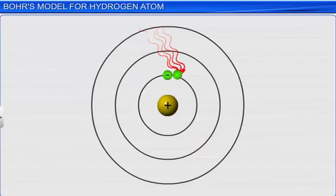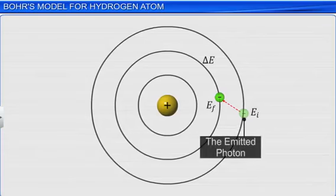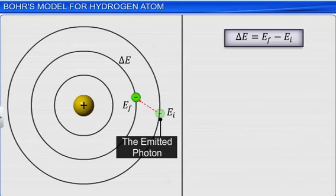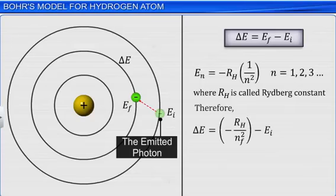According to the second postulate of Bohr's model, the energy gap between the two orbits is given by the equation delta E equals E final minus E initial. Since the energy of a stationary state is given by the equation En equals minus Rydberg's constant multiplied by 1 divided by n square, we can substitute E final in the energy change equation by minus RH divided by n final square.